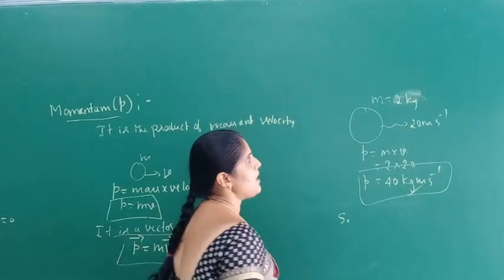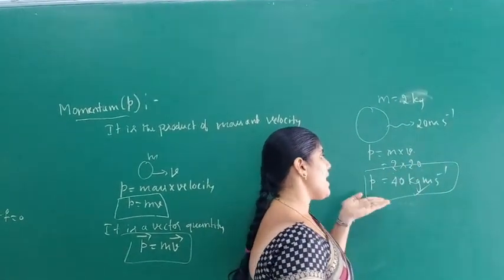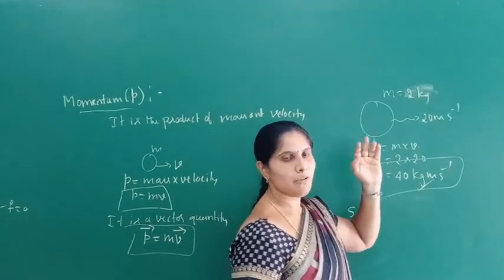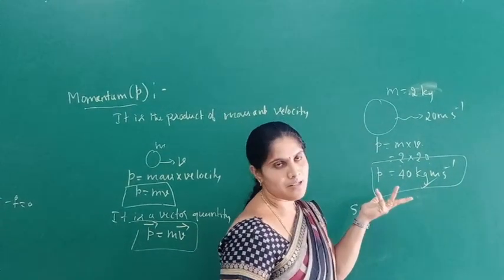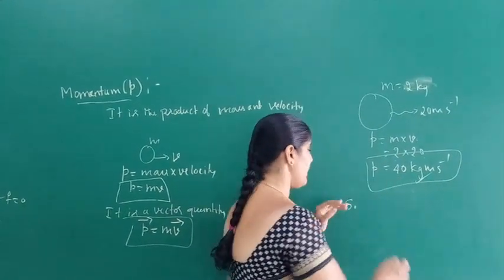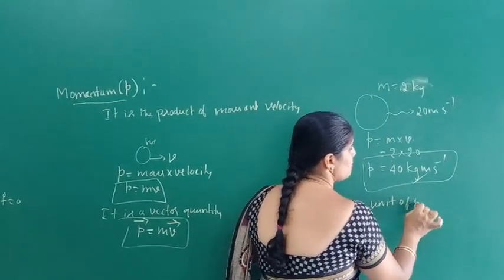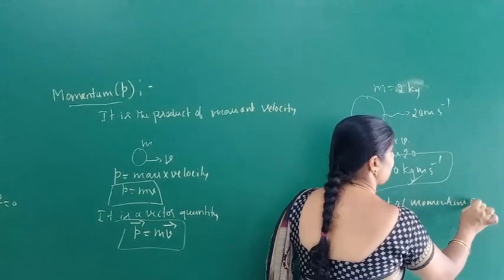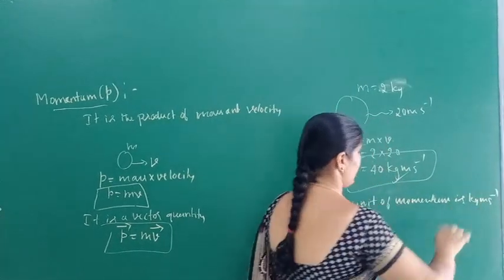So a body of mass 2 kg moving with a velocity of 20 meters per second has a momentum of 40 kg·m/s. The SI unit of momentum is kg·m/s.